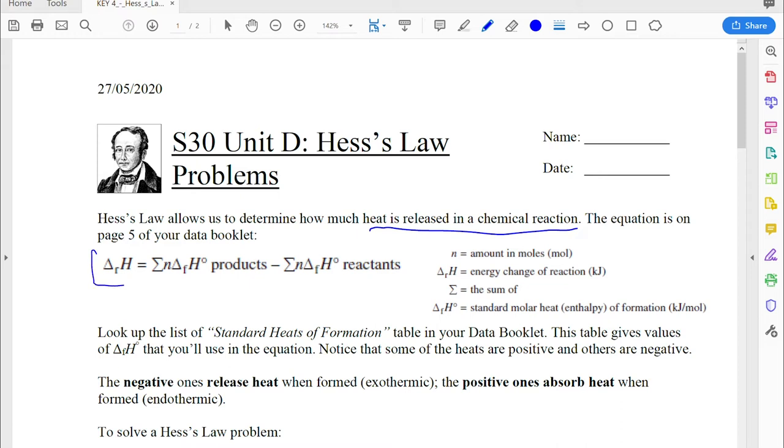Now there is a big fancy looking formula on page five of your data booklet, and let me tell you, it does look confusing. It has got a lot of weird symbols in it. So let's break it down. First thing we see is on the left-hand side, this little triangle, that's the Greek symbol delta. It means a change in, delta Rh.